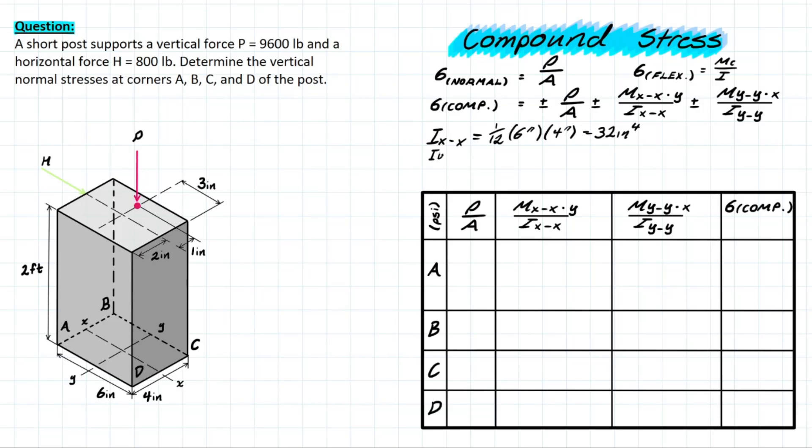And then similarly for Iyy you have a very similar thing except now we are swapping those values. And that will leave you with 72 inches to the power of 4.